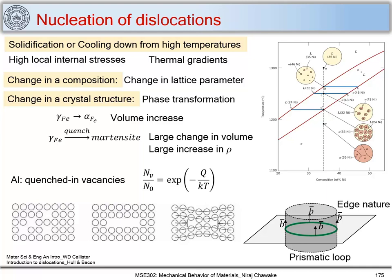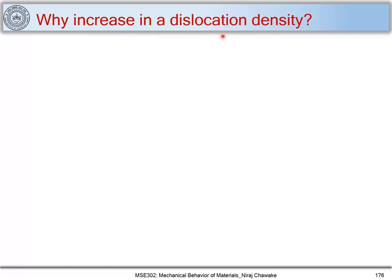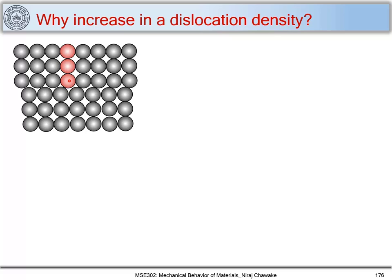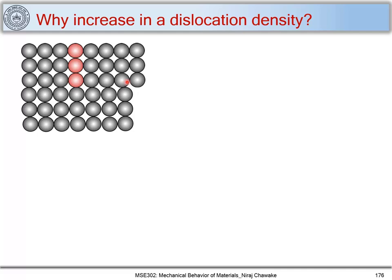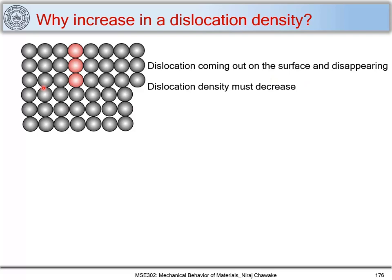Now let's look at why dislocation density increases during plastic deformation. We have seen that when you apply a shear stress, a dislocation moves and comes out forming a step — a Burgers vector — and the rest of the crystal becomes dislocation-free. So when a dislocation comes out on the surface and disappears, there is no dislocation left inside. If we increase deformation, why does dislocation density increase if dislocations are coming out and disappearing?